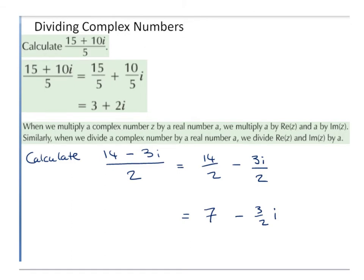Dividing complex numbers. Calculate 15 plus 10i divided by 5. So 15 plus 10i over 5 can be broken down to 15 over 5 plus 10 over 5 times i. 15 divided by 5 gives us 3, and 10 divided by 5 gives us 2, with an i. When we divide a complex number by a real number a, we divide the real part and the imaginary part by a. So here we divide the real part by 5 and the imaginary part by 5.